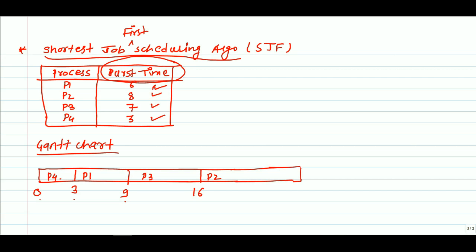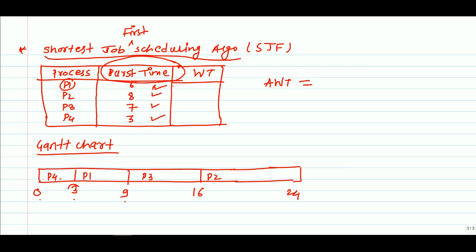Finally, P2 is executed last with a burst time of 8 milliseconds: 16 + 8 = 24. Now to calculate average waiting time, the waiting time for P1 is 3 milliseconds, for P2 is 16 milliseconds, for P3 is 9 milliseconds, and for P4 is 0 milliseconds since it was executed first.